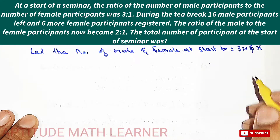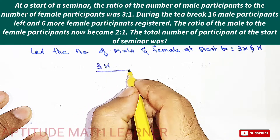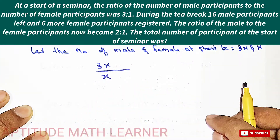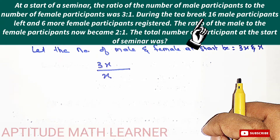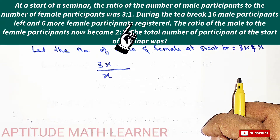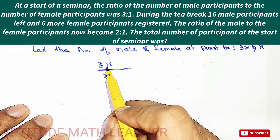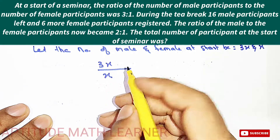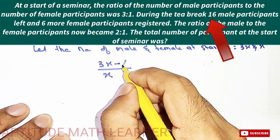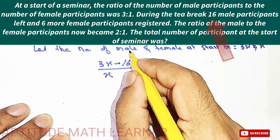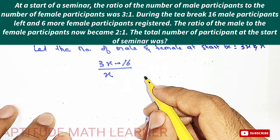So the ratio for male to female is 3x upon x. Now, as the question says, during the tea break 16 male participants left — so the number of males after the break is 3x minus 16.